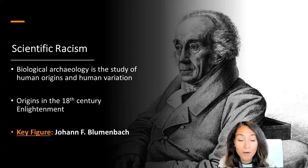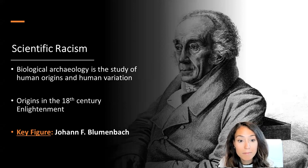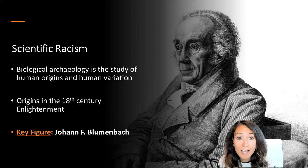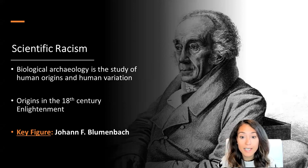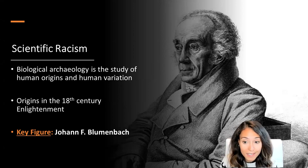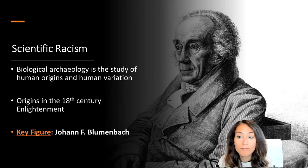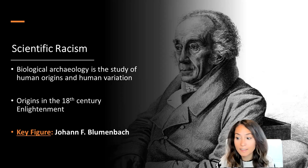A key figure in all this was a man named Johann Friedrich Blumenbach, a German physician and anatomist who developed a five-fold classification system of human varieties, including American, Asian, African, European, and Malay — a term that was popular at the time to refer to populations from the Pacific Islands.